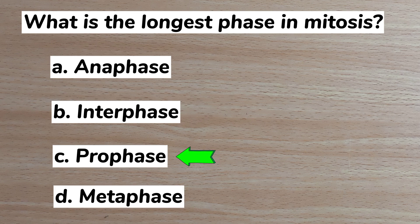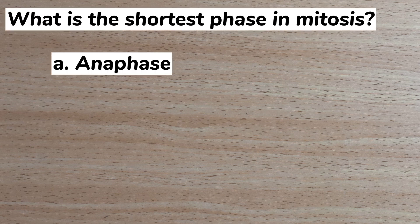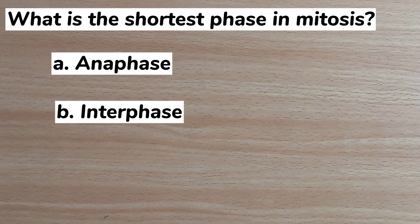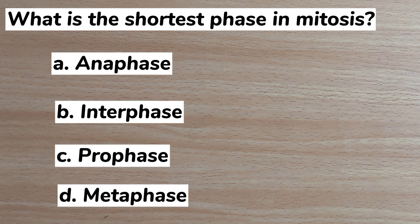Number 5. What is the shortest phase in mitosis? A anaphase, B interphase, C prophase, D metaphase. Answer: A anaphase.